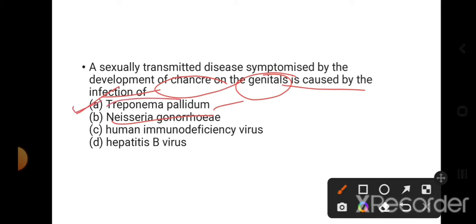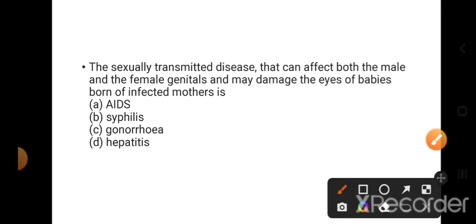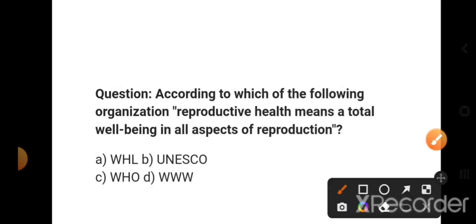Option A: HIV and Hepatitis B viruses - this is the wrong statement. Sexually transmitted disease that can affect both male and female genitals and may damage the eyes of babies born of infected mothers. So this is the right answer: gonorrhea. This is the causative agent and the name of the disease is gonorrhea. According to which organization is reproductive health defined as total well-being in all aspects of reproduction? Here, reproductive health is given by the World Health Organization.